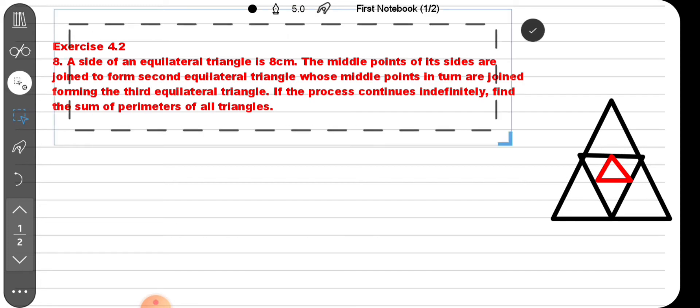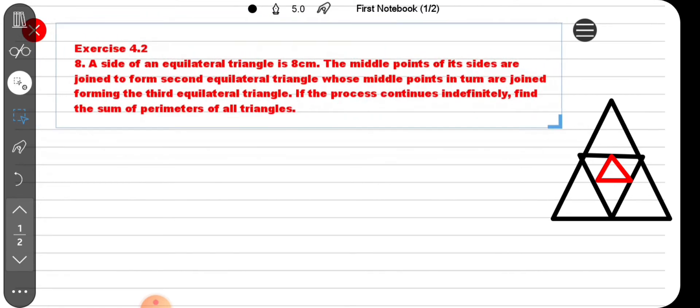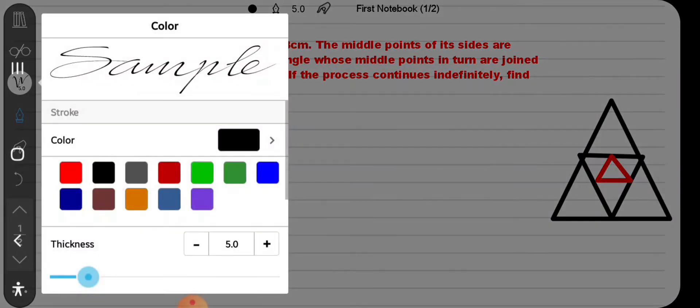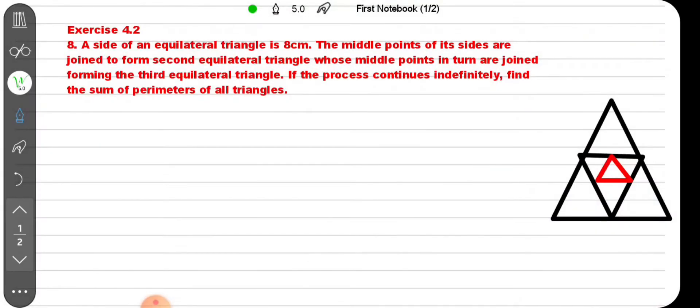If the process continues indefinitely, find the sum of perimeters of all triangles. So let me draw this out. We have an equilateral triangle with side 8 centimeter.